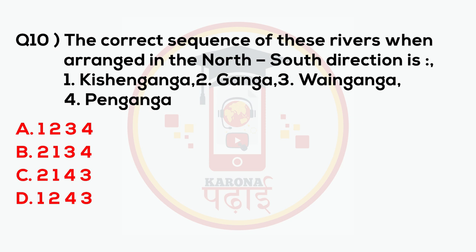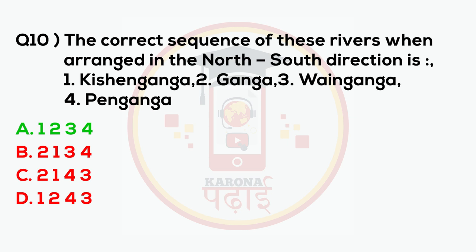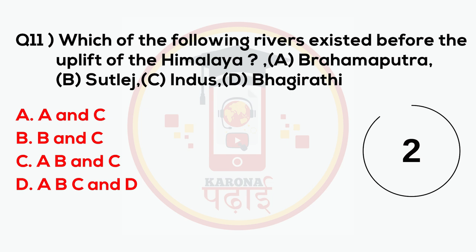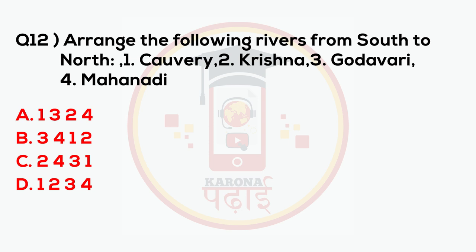The correct sequence of these rivers when arranged in the north-to-south direction is: 1. Kishanganga, 2. Ganga, 3. Penganga, 4. Tungabhadra. The answer is 1, 2, 3, 4. Arrange the following rivers from south to north: 1. Kaveri, 2. Krishna, 3. Godavari, 4. Mahanadi.